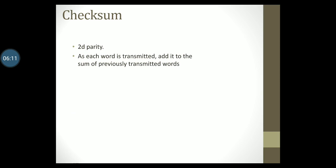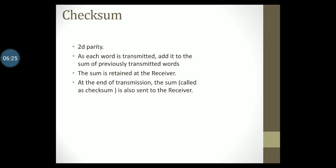Simple parity cannot detect two errors within the same word. One way of overcoming this difficulty is to make use of checksum, which is a type of two-dimensional parity. As each word is transmitted, it is added to the sum of a previously transmitted word and the sum is retained at the transmitter's end. At the end of the transmission, the sum which is now called as the checksum is also sent to the receiver. The receiver can check the calculated sum along with the transmitted sum. If the two sums are the same, then no errors were detected at the receiver end. If there is an error, the receiving location can then ask for a retransmission of the entire data.